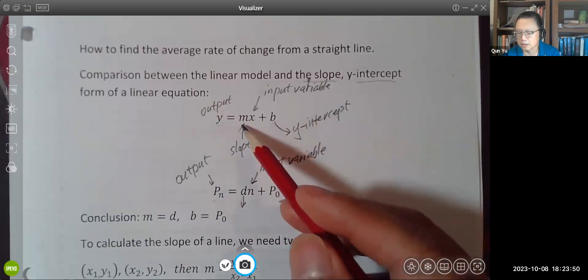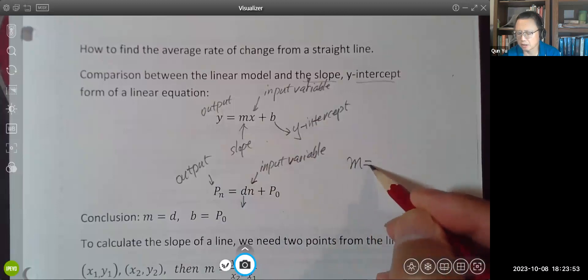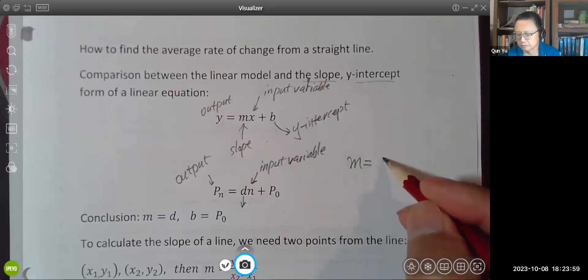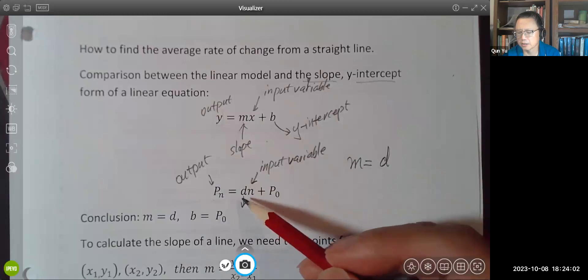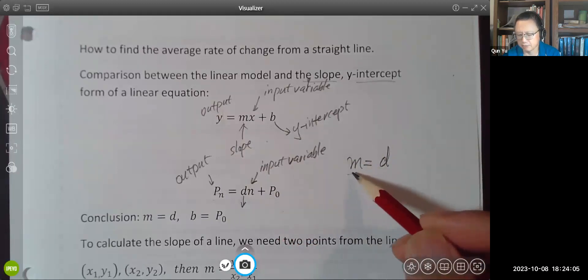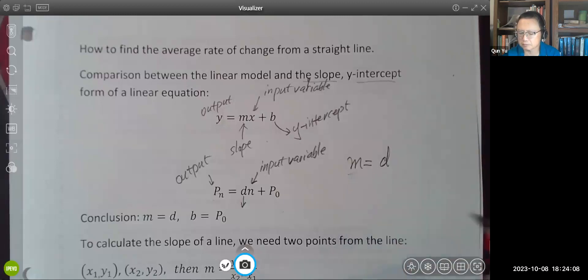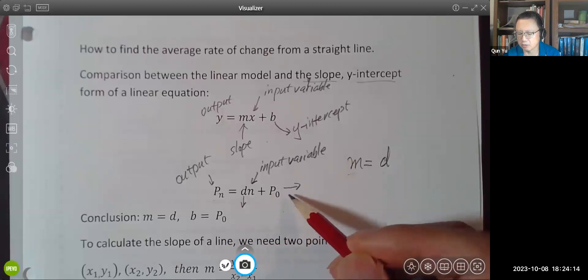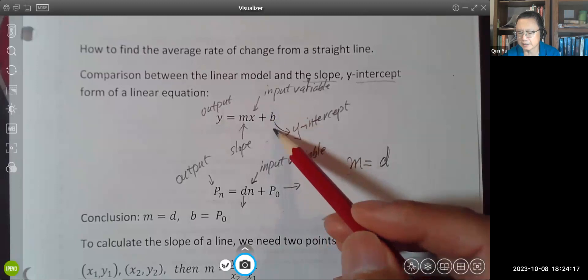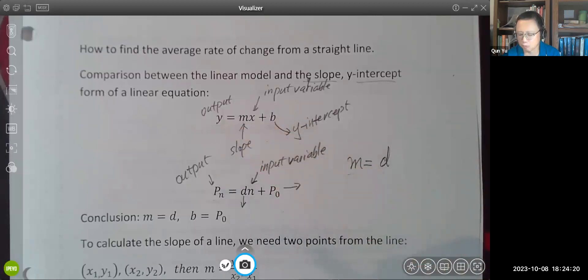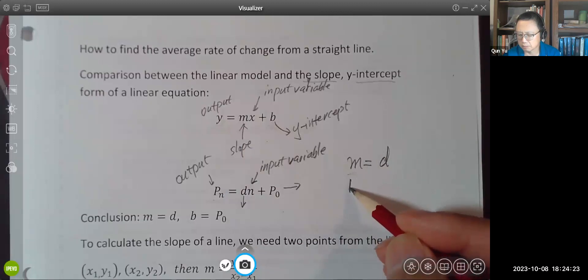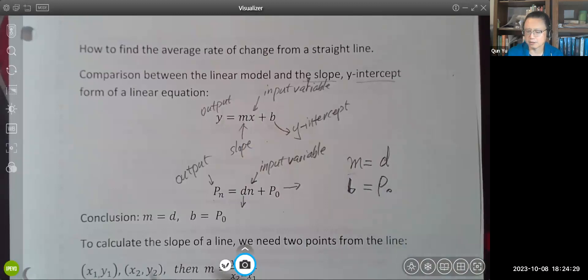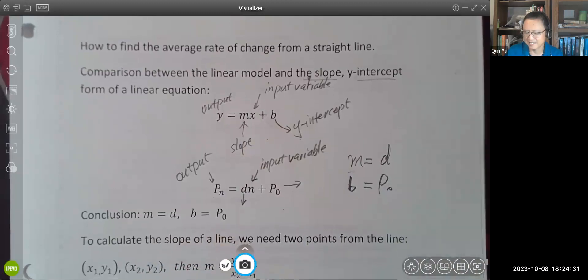In other words, these two are equivalent. The slope in the slope-y-intercept form is equivalent to our growth rate, and we also call it the average rate of change, just another name for the slope. And also this standing alone number in our linear model is the initial value. It is equivalent to the y-intercept in this slope-y-intercept form. So this b is our initial value. So this is our conclusion from this comparison.